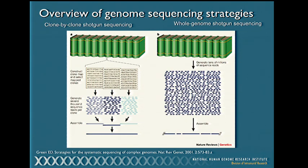Before jumping in, I want to give a quick overview of how genome sequences get generated. This is taken from an older review going over two modes of genome sequencing. Clone-by-clone shotgun sequencing was used for the publicly funded Human Genome Project. They took the human genome—imagine it as an encyclopedia where each chromosome is a volume—and broke each chromosome into about 350 kilobase inserts cloned into vectors called BACs. Before sequencing, they first made a map of these BACs along each chromosome.